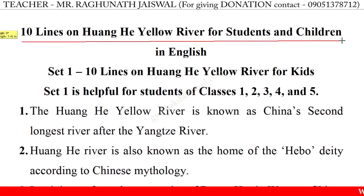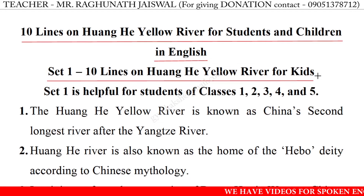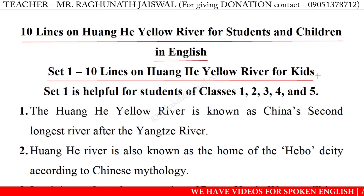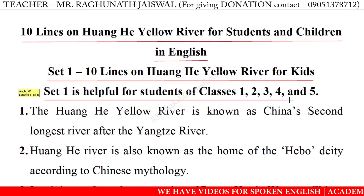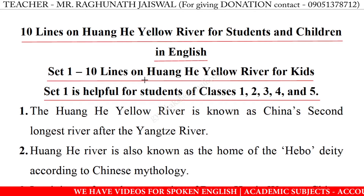10 lines on Huanghe Yellow River for students and children's English. Set 1: 10 lines on Huanghe Yellow River for kids. Set 1 is helpful for students of classes 1, 2, 3, 4 and 5.